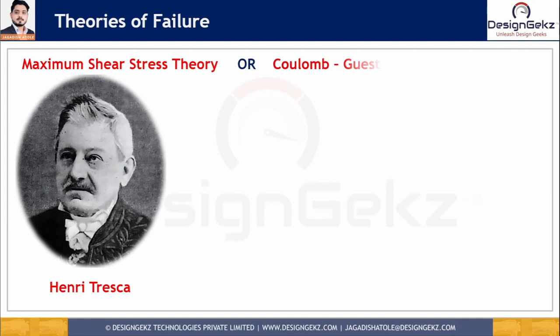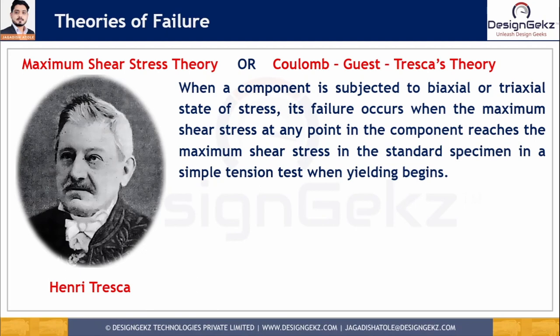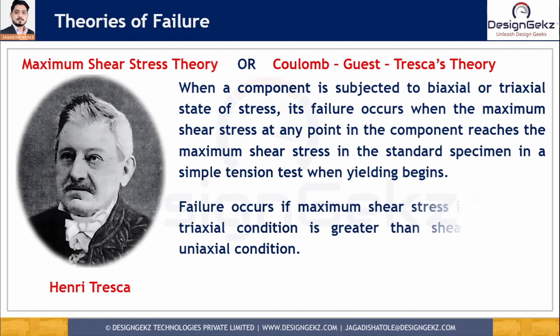According to this theory, when a component is subjected to a biaxial or triaxial state of stress, its failure occurs when the maximum shear stress at any point in the component reaches the maximum shear stress in the standard specimen in a simple tension test when yielding begins. In short, failure will occur when the maximum shear stress exceeds the shear stress at uniaxial loading.